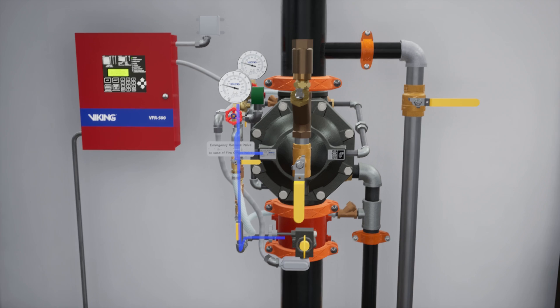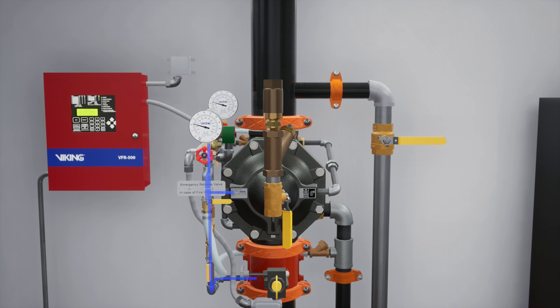The prime line directs water to the prime chamber of the Deluge valve. The prime line consists of an open priming ball valve, a Y strainer, a restricted orifice, and a check valve.